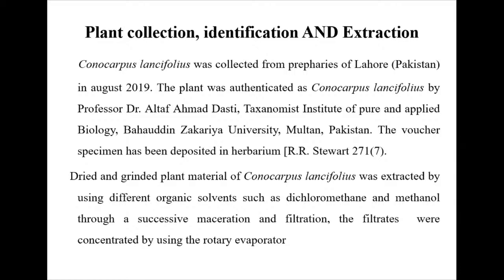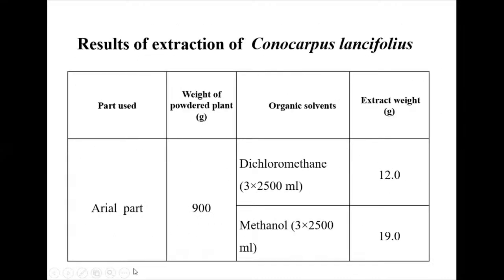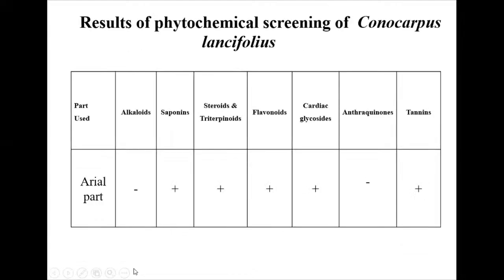Dried and ground plant materials of Conocarpus lentifolius were extracted with organic solvents dichloromethane and methanol through successive maceration and filtration. Percolation was performed and rotary evaporation was done to concentrate the extracts. About 900 grams were used, yielding 12 grams of extract from dichloromethane and 19 grams from methanol. Preliminary phytochemical characterization gave positive results for saponins, terpenoids, cardioglycosides, and tannins. LD50 values were determined; the dichloromethane extract showed quite high LD50, while methanol extract showed lower values.